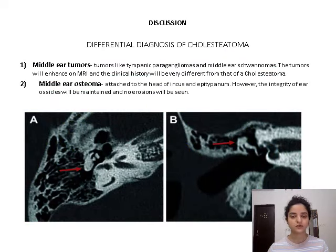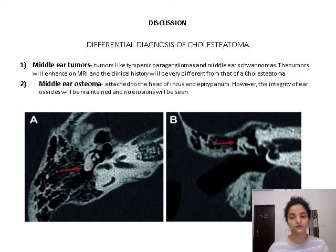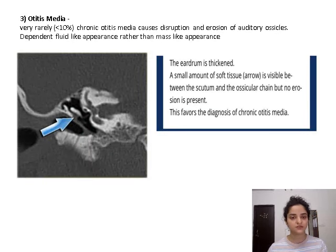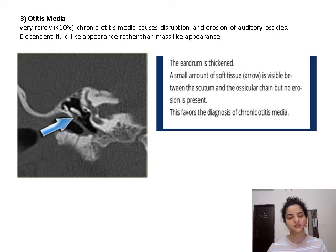Discussion: Differential diagnosis of cholesteatoma can include middle ear tumors, middle ear osteomas, or otitis media. Middle ear tumors, such as tympanic paragangliomas or middle ear schwannomas, will enhance on MRI and the clinical history will be different from that of cholesteatoma. Middle ear osteomas are attached to the head of the incus and epitympanum; however, the integrity of ossicles is maintained and no erosions are seen. Otitis media very rarely — less than 10% of cases — causes disruption and erosion of auditory ossicles, and a dependent fluid-like appearance is seen rather than the mass-like appearance seen in cholesteatoma.